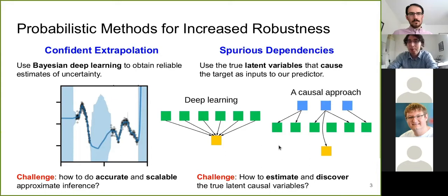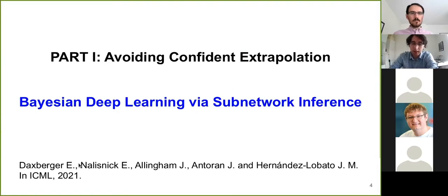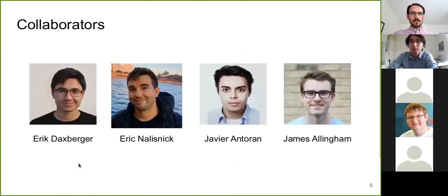This is the roadmap for today's talk. I'm going to start by describing a method for Bayesian deep learning called subnetwork inference that will allow us to obtain accurate estimates of uncertainty. This work has been accepted for presentation at ICML this year. It is joint work with PhD students and postdocs in my group: Eric Daxberger, Eric Nadinski, Javier Antoran, and James Allenham.